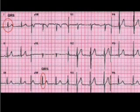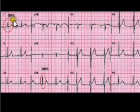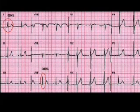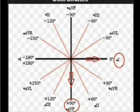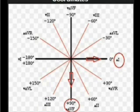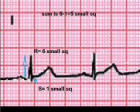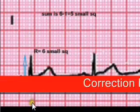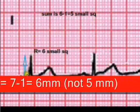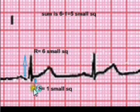Now let us choose a tracing and calculate. We choose Lead I and Lead AVF. First, look at the QRS complex in Lead I — check the positive deflections and the negative deflections. The positive deflection is around 6 small squares and the negative deflection is around 1 small square, so the net sum is 6 minus 1, which equals 5 small squares for Lead I.